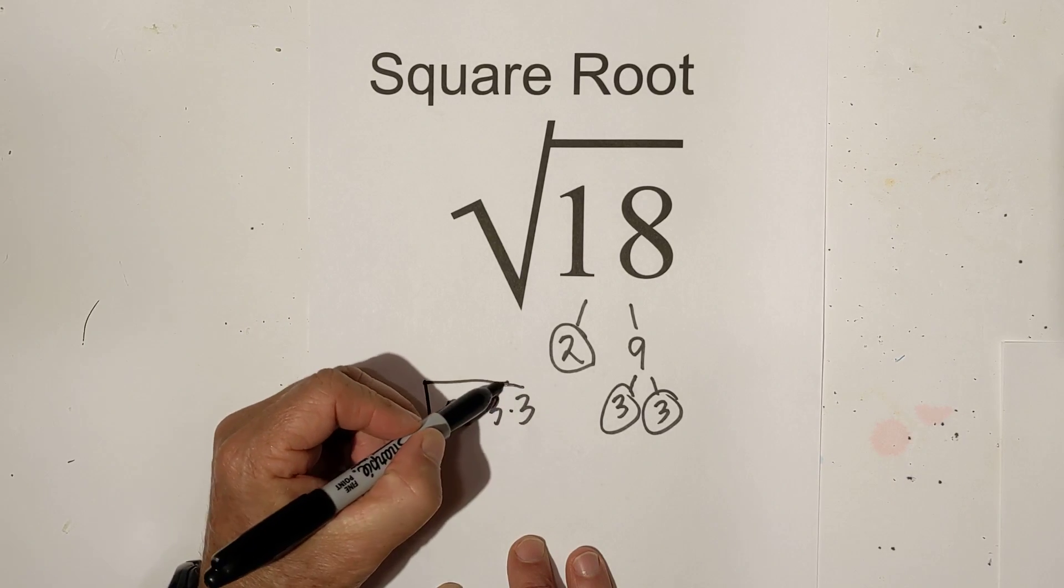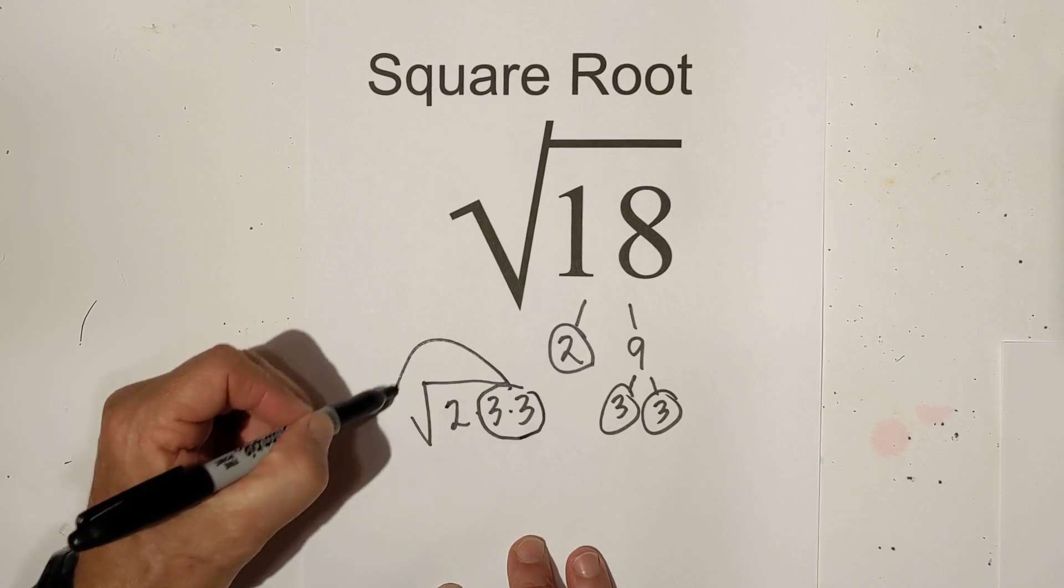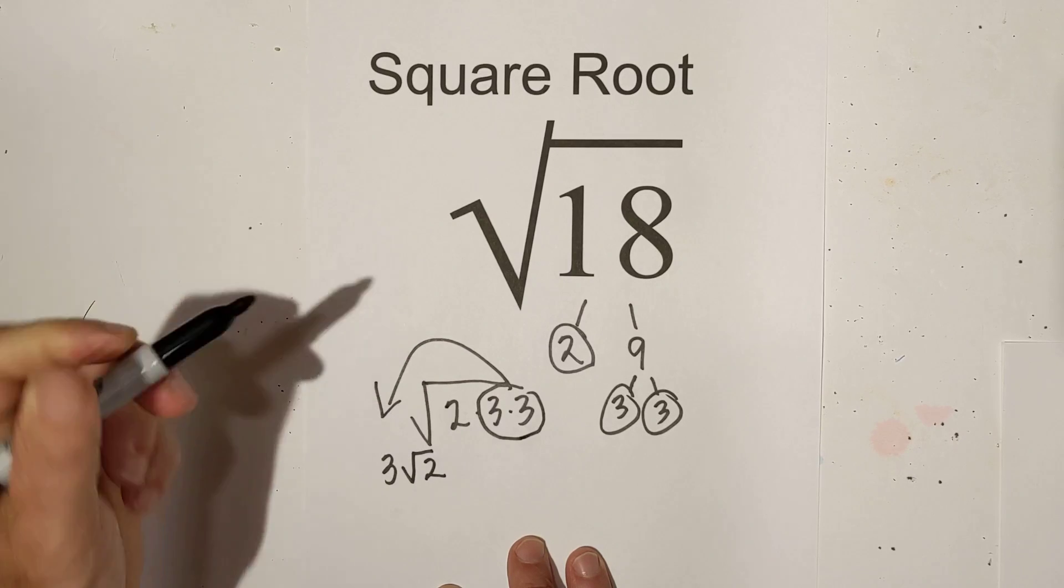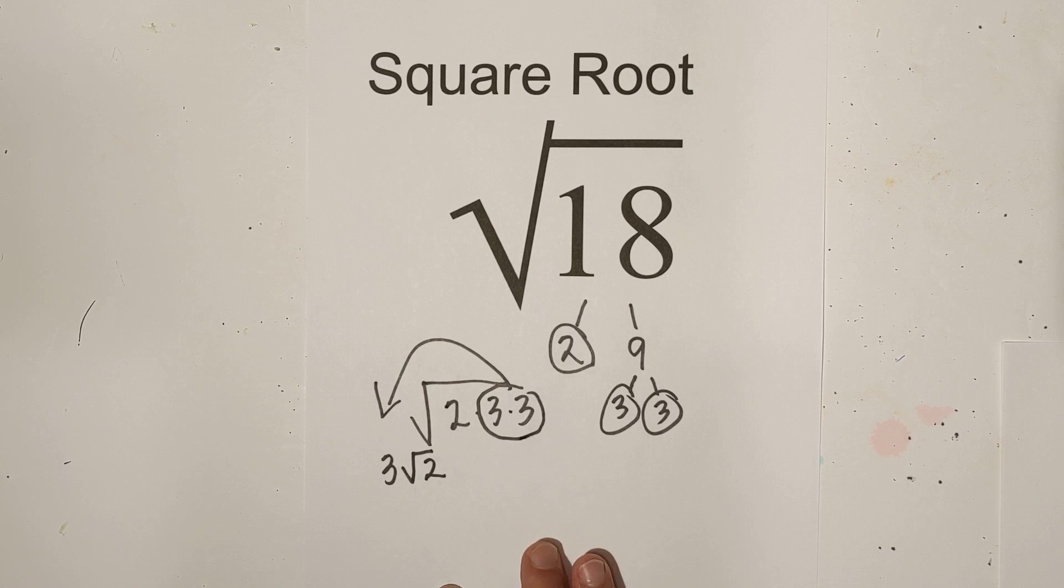I have a pair of 3's, so they come out. I'll rewrite it as 3 square root 2. There it is, simplified.